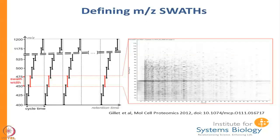This depicts just how complicated the output is and also shows how swaths work. The distance between one point and the next is called one cycle. Initially you do one precursor scan to see what MS1 things you have, and then you step across a predefined mass range as quickly as you can. In this case we have depicted 25 Dalton swath windows of fixed width all the way across, and then you go back — that is one cycle.